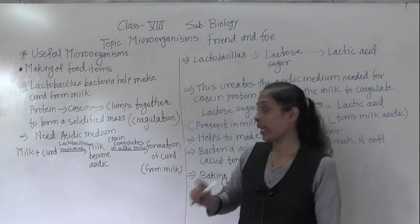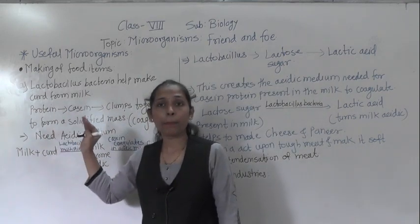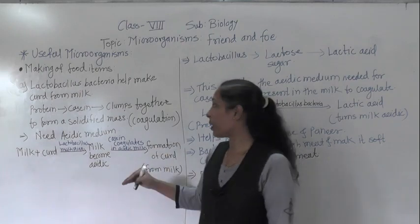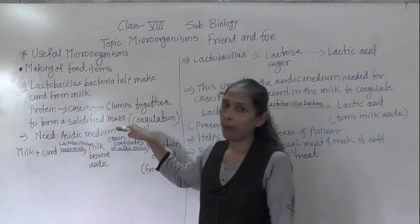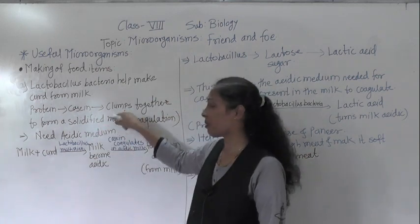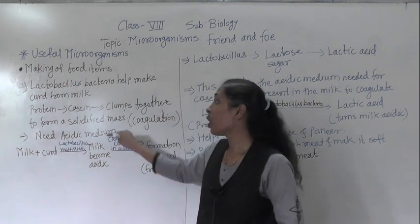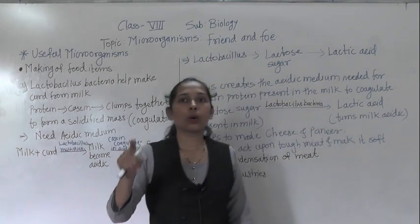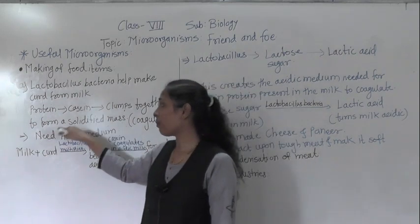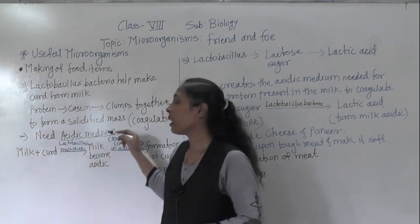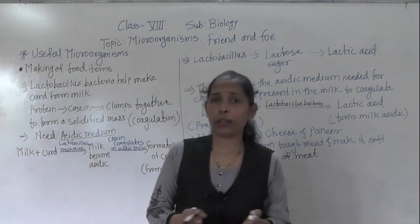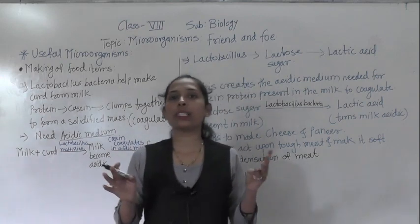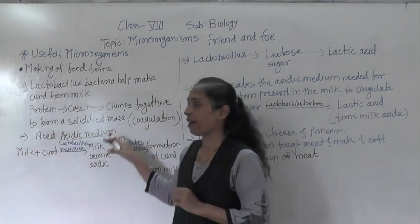Keep in mind: curd can be prepared only if casein protein is present in milk, because that casein protein clumps together to form a solidified mass — small portions come together and become a solidified mass. That process is called coagulation. However, for coagulation to occur, the casein protein requires an acidic medium. Only in an acidic medium does the casein protein clump together and form the solidified mass.